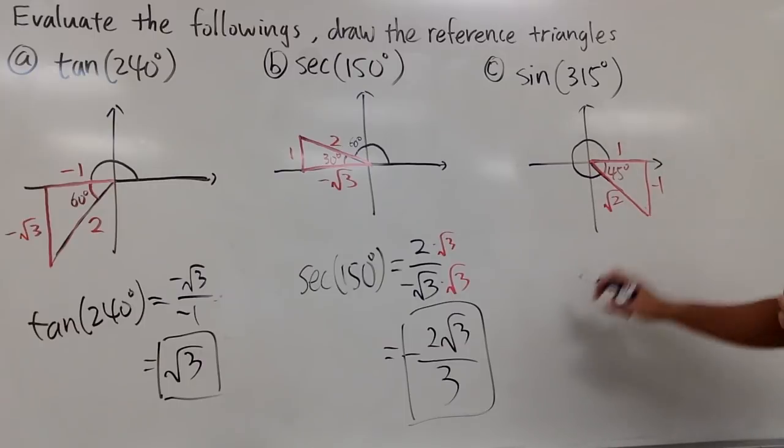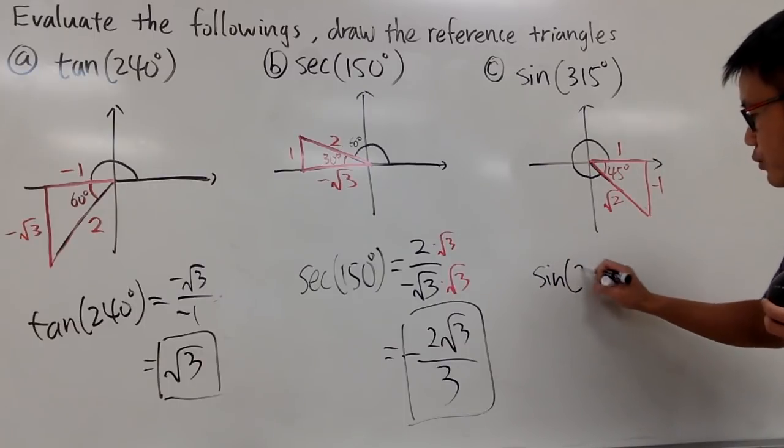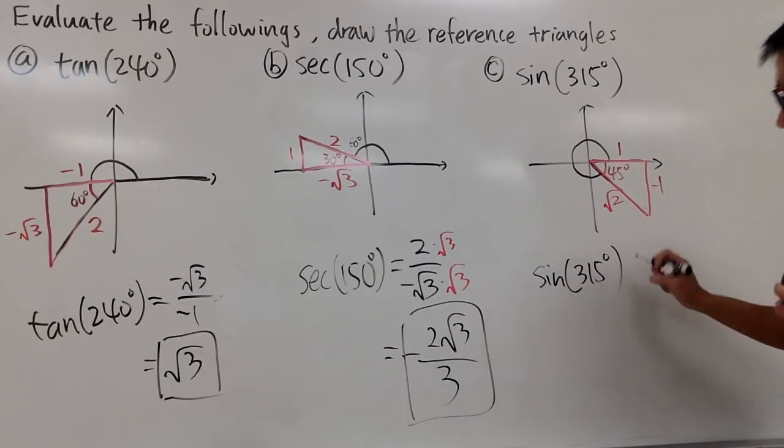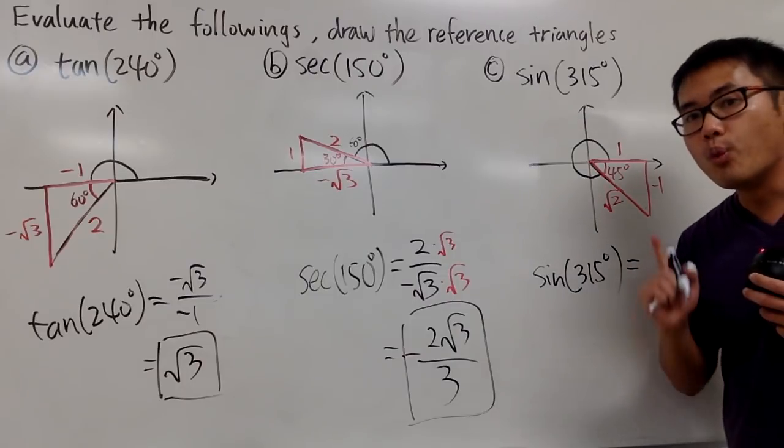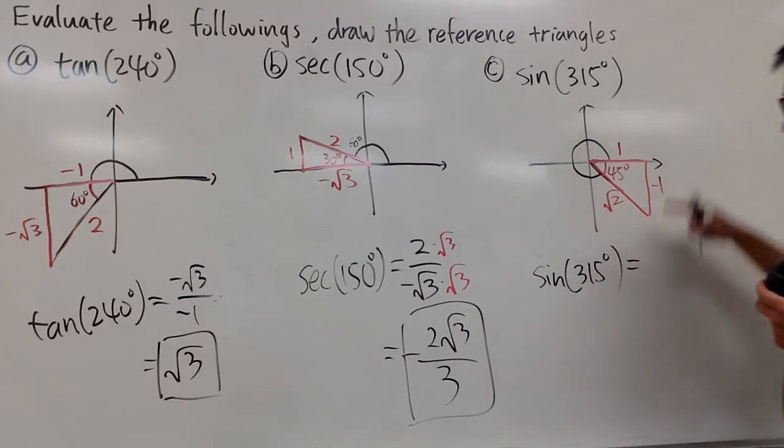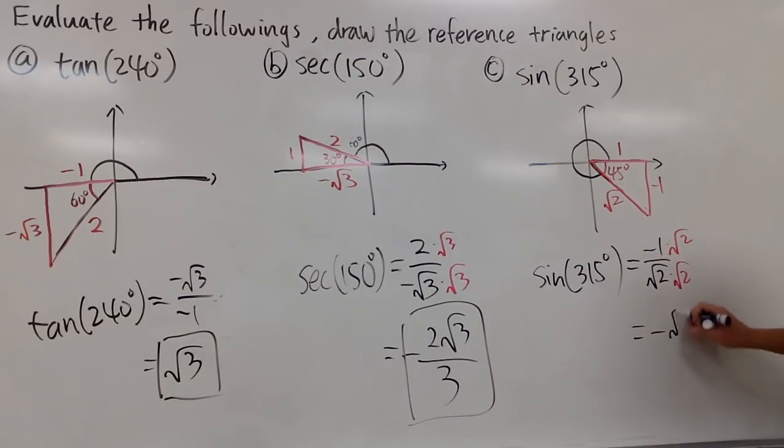So, based on this, we can say sine of 315 degrees. This is equal to y over r. Negative 1 over square root of 2. Y over r. And then fix this a little bit. Multiply the bottom and the top by square root of 2. So we get negative square root of 2 over 2 like this.